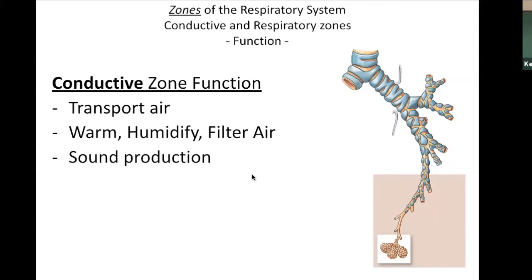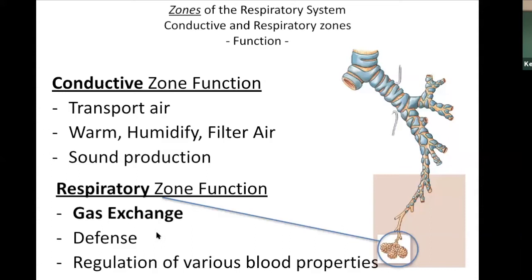The functional zones of the respiratory system are the conductive zone and the respiratory zone. The conductive zone gets air all the way down to the last areas before exchange. The bulk of the system superior to inferior is this conductive zone. The respiratory zone — where gas exchange actually occurs — is within the alveoli. There are also defensive mechanisms down there, like macrophages, as well as ways to regulate various blood properties.